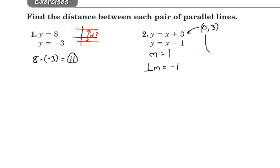Now, using this point and this slope, I'm going to make an equation of a line. y equals negative 1x plus 3. y-intercept right here, slope right here. This line that I just created is perpendicular to either line.